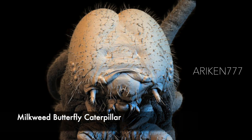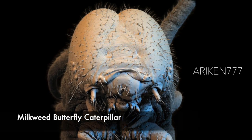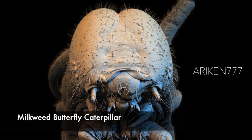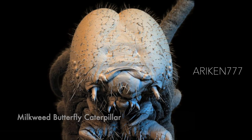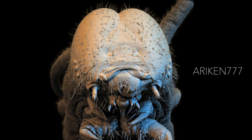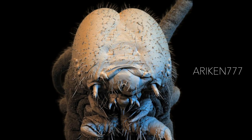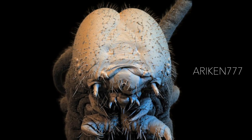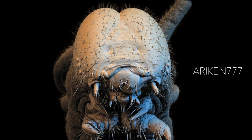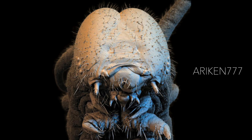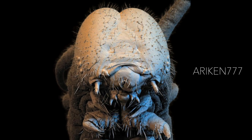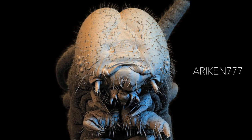A milkweed butterfly caterpillar. This image shows the underside of the larvae of a milkweed butterfly, showing its mouth parts in lower center and forelegs at bottom center.